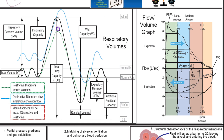Obstructive disorders are disorders where there's something that blocks the flow of air. So we wouldn't necessarily expect the volumes to change, but we would expect the rates to change — it might take longer to breathe in that air. In a lot of obstructive disorders, you get air trapping, and so the volumes actually increase.